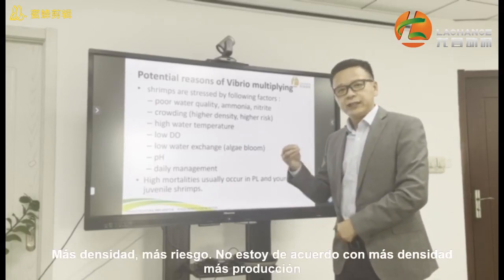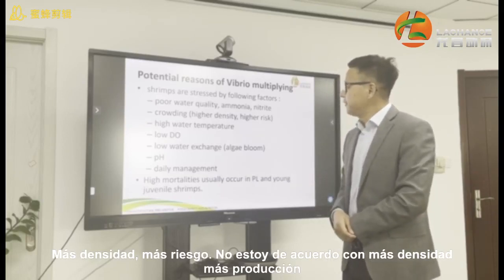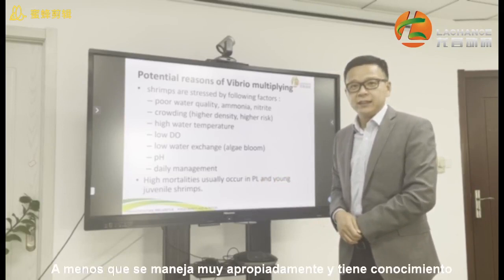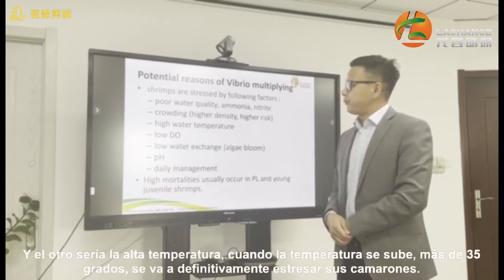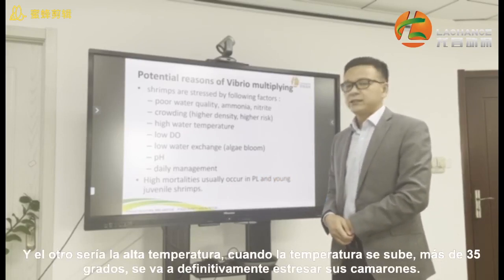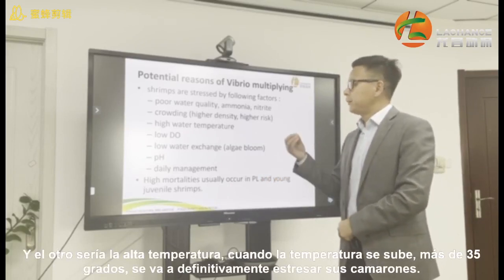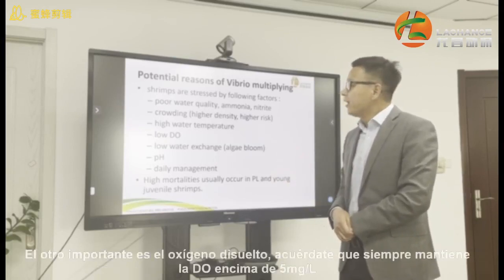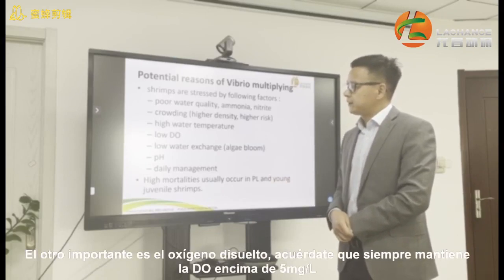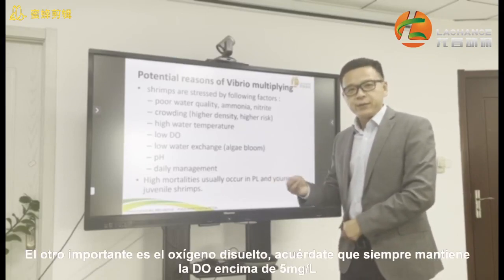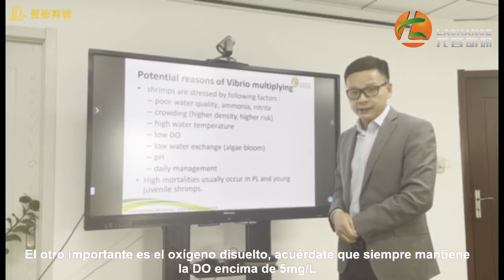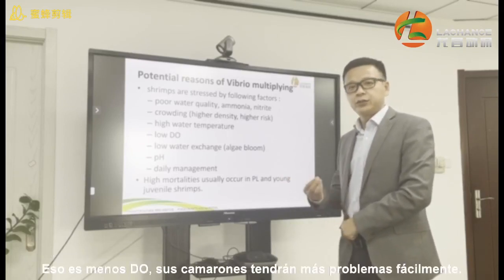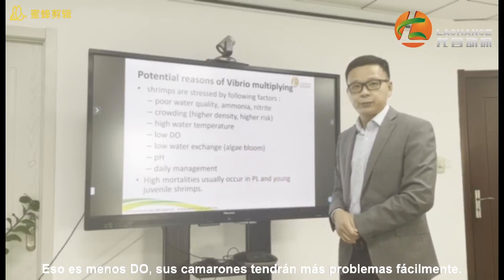I don't agree that higher density automatically equals higher production — unless you manage properly and have the knowledge. Another factor is high water temperature. When the temperature goes above 35 degrees Celsius, it will definitely stress your shrimp. The most critical factor is low dissolved oxygen. Always keep dissolved oxygen above 5 milligrams per liter. If it drops below 3 or below 2, your shrimp will definitely get problems easily.